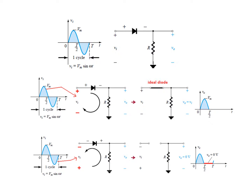Now let us go to the negative half cycle. In the negative half cycle, this will become negative and the bottom will become positive. As already discussed, if the negative terminal touches the positive terminal of the diode, this makes it reverse biased. So this is a reverse bias condition. In reverse bias, the diode does not conduct — it behaves like an open circuit. No current will flow through this path, and therefore V×I will be zero because current is zero. Therefore, for the second half, the output will be zero volts.